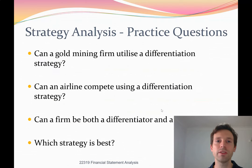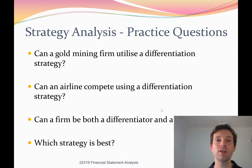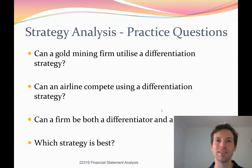A few practice questions to think about strategy analysis. First: can a gold mining firm utilize a differentiation strategy? A gold mining firm sells gold, which is a commodity traded on markets with set prices. So a gold mining company has no ability to differentiate the product they are selling — they are a price taker selling into a commodity market. The only way a gold mining company can generate abnormal value is by being very efficient with their operations and maintaining low operating expenses to maximize their profit margin. They have no ability to change the product and sell gold for a higher price, so they can't really use a differentiation strategy.